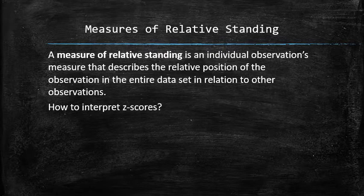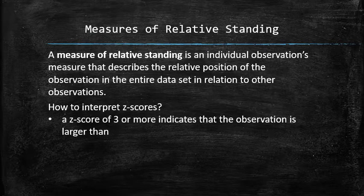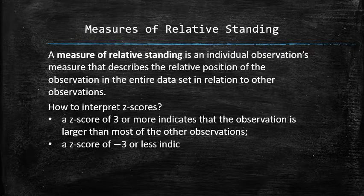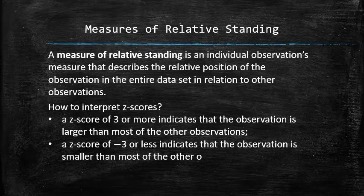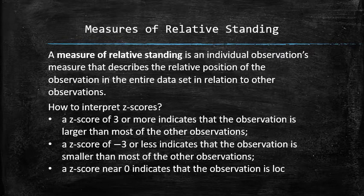For instance, a z-score of 3 or more indicates that the observation is larger than most of the other observations. A z-score of negative 3 or less indicates that the observation is smaller than most of the other observations. A z-score near zero indicates that the observation is located near the mean.